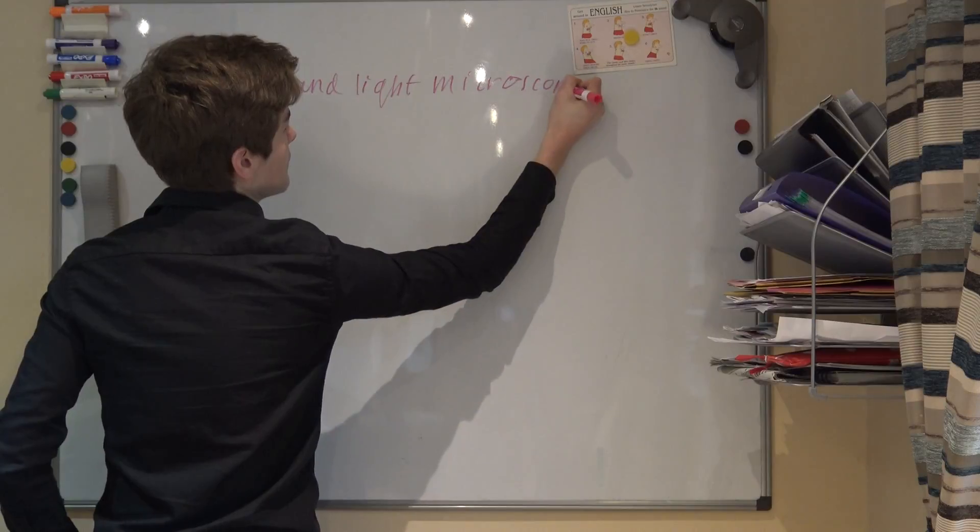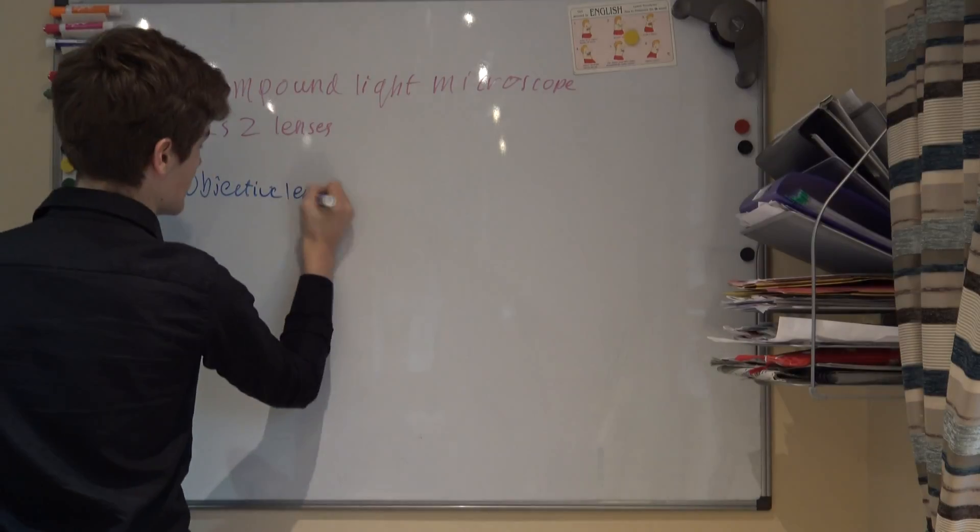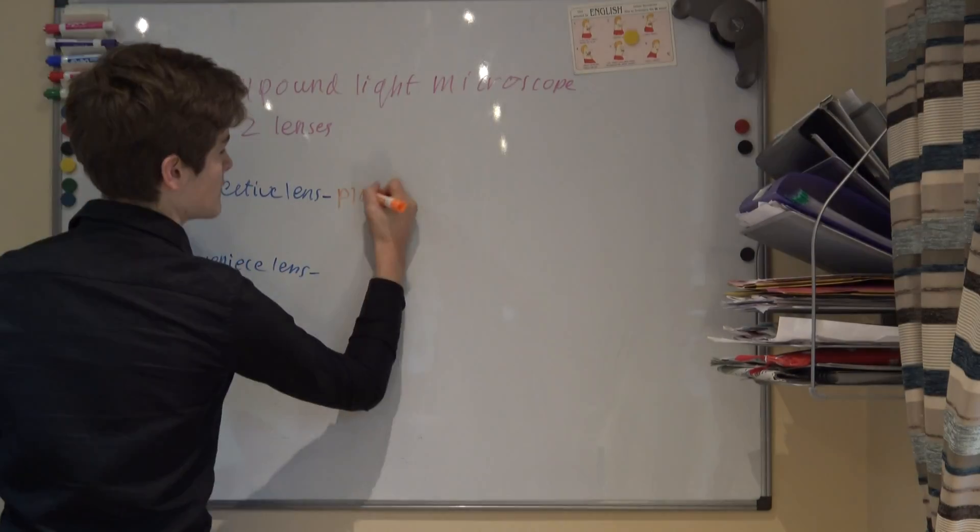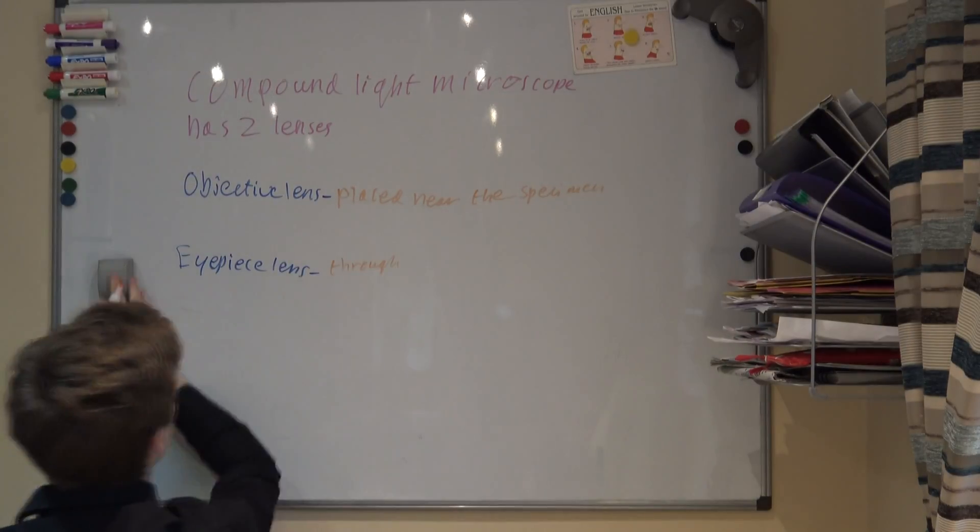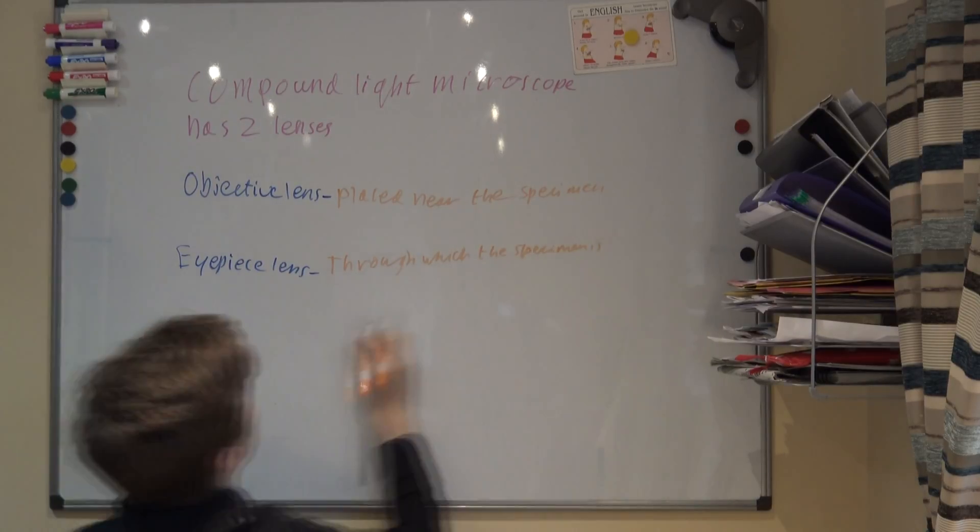A compound light microscope has two lenses, the objective lens, which is placed near the specimen, and an eyepiece lens, through which the specimen is viewed. The objective lens produces a magnifying image, which is then magnified again. This allows for a much higher magnification than in a standard light microscope.